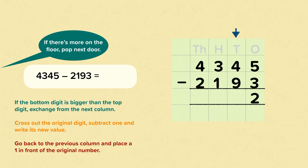To remember when to exchange, think about this: if there's more on the floor, pop next door. So there's more on the floor here because nine, the number on the bottom, is greater than four, the number on the top. We can't take away nine from four. So what we need to do is pop next door into the hundreds and exchange. We're going to exchange a hundred for ten tens. So we cross out the original hundreds digit and subtract one from it, so now we've only got two hundreds. Then we go back to the tens and add the tens we've exchanged, so now instead of having four tens we've got fourteen tens. Fourteen take away nine is five.